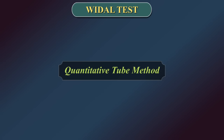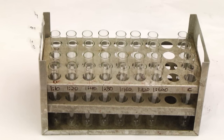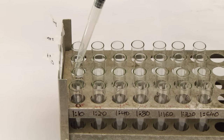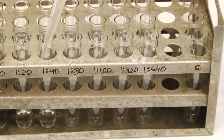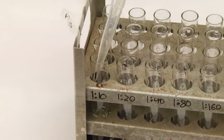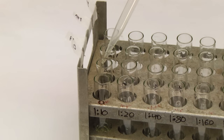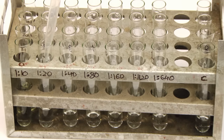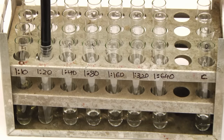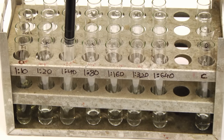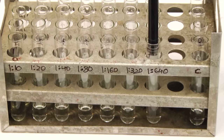Quantitative tube method: Take the appropriate number of sets — one set for each antigen suspension — of 8 Kahn tubes and label them 1 to 8. Pipette 1.9 ml of physiological saline into tube number 1 of all sets, and 1 ml of physiological saline into each of tubes 2 to 8. Add 0.1 ml of patient serum to tube number 1 of all sets and mix well. Transfer 1 ml serially from tube 1 to tube 2, tube 2 to tube 3, continuing until tube 7 in each set.